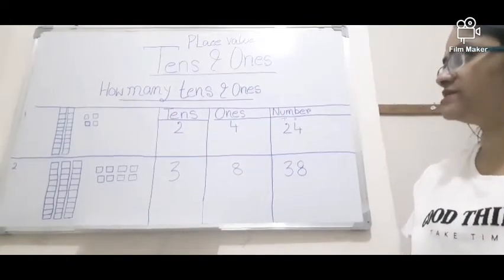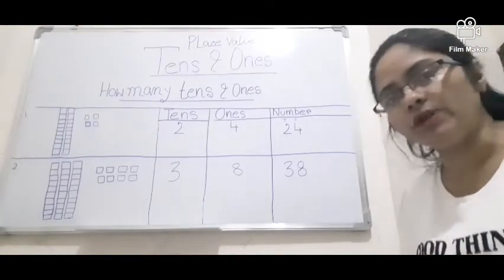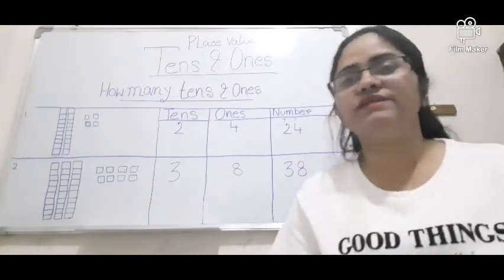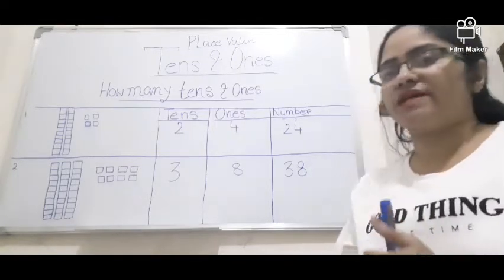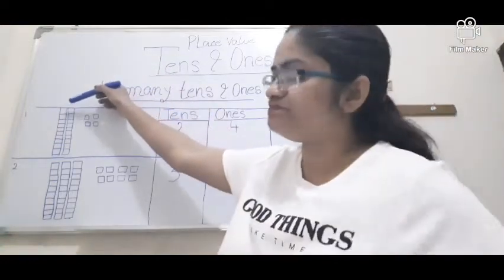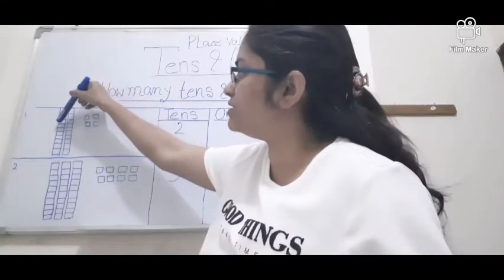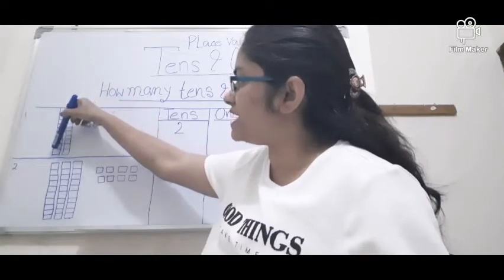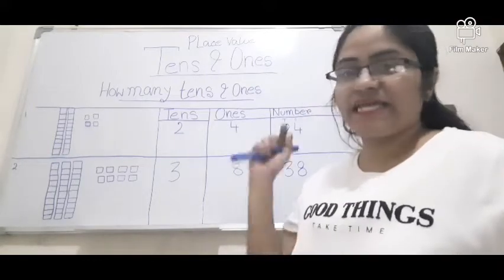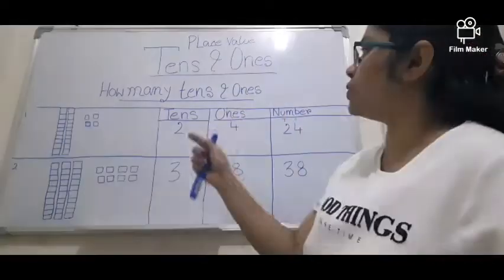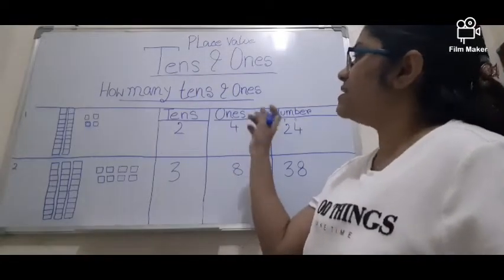An important thing: in the case of the 1s place we can denote 1 block, but in the 10s place we are denoting 10 blocks in one group. See this picture — here are 10 blocks: 1, 2, 3, 4, 5, 6, 7, 8, 9, 10 — 10 blocks together in one group is called the 10s place. Here is the 1s place and here is the 10s place.